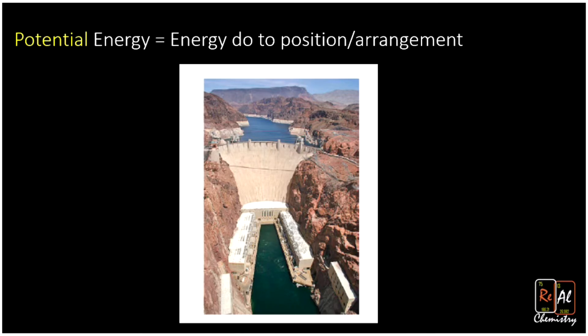And those arrangements could be with gravity, as in stuff being high up away from Earth, or it could be with magnets - two magnets could be far away from each other and as you bring them together you could get out work. Or it could be with electric charges. All of these would be having to do with position and would be potential energy.